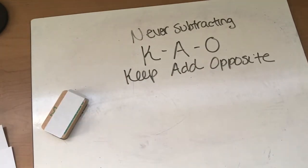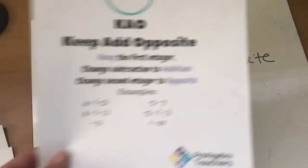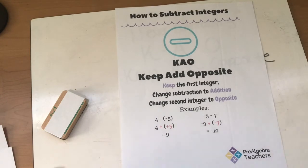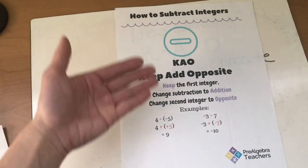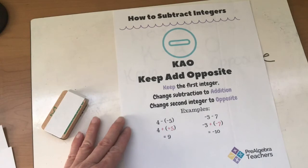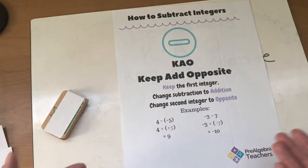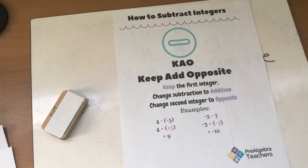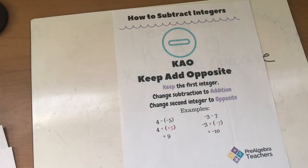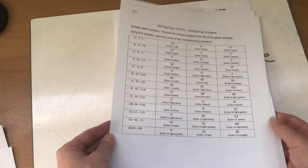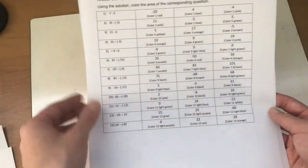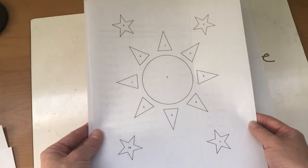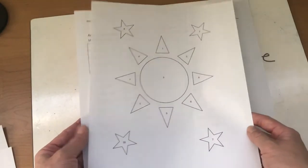So I've created for you today an awesome how to subtract integers poster that's much prettier than my ugly board right here. But I have this hung up in my classroom for my students so that they can remember K-A-O. Keep add opposite. Keep the first integer, change your subtraction to an addition, and change your second integer to the opposite. And I've given you two examples down here so they can follow along. Another wonderful freebie that you will also have access to today is an amazing subtracting integers coloring page. So there's 13 questions for your students to answer. They will figure out the correct answer and then color in this fun coloring page. My students love to color. It's relaxing and they're learning at the same time.